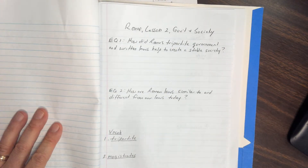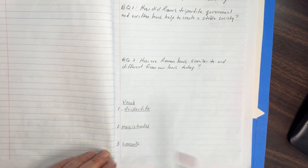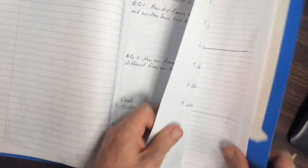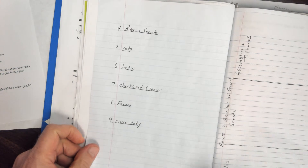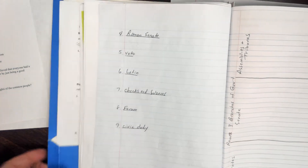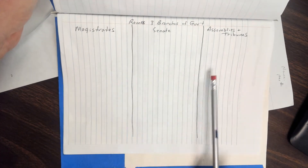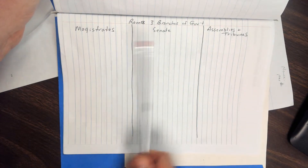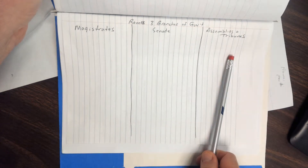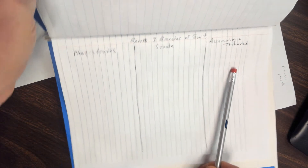Two essential questions, and then nine more vocab words that start with tripartite and go on to include civic duty, form, and checks and balances. After that, we put a set of notes in your folder — three columns with a whole bunch of facts about magistrates, about the senate, and about assemblies and tribunes. Are you following along? Do you have those pages in your notes?